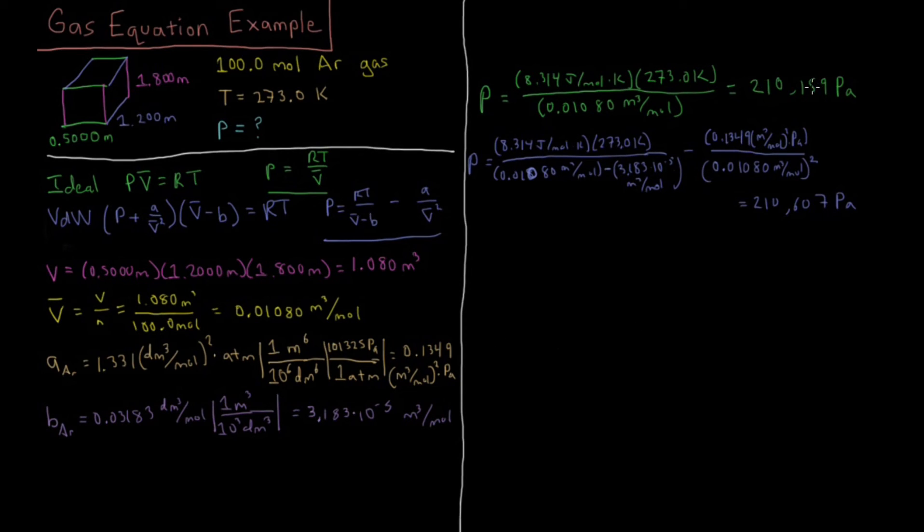If we convert back into atmospheres, which is dividing by 101,325, the reverse of the unit conversion we did, we convert each of these back into atmospheres, which gives us a more intuitive feel. We don't have as much everyday experience with Pascals, while an atmosphere is just typical atmospheric pressure at sea level. For the ideal gas we get 2.074 atmospheres, and for Van der Waals we get 2.079 atmospheres.